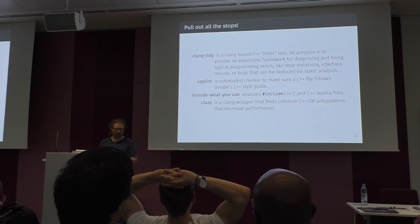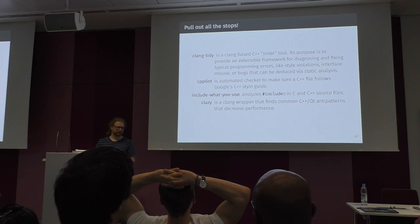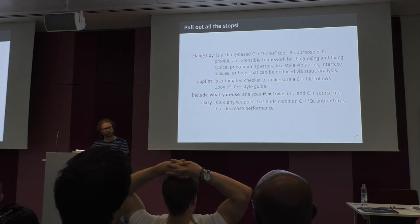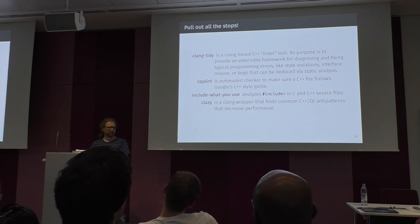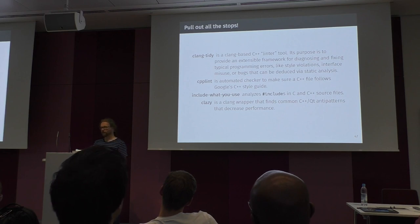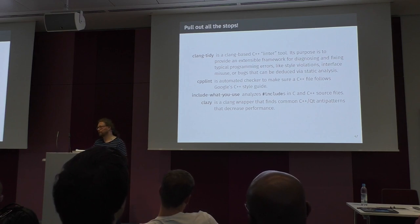Clazy has many Qt-specific warnings — for example, because Qt uses copy-on-write in many places, calling non-const functions on temporaries detaches objects and creates an unnecessary copy. A good example is range-based for-loops which implicitly call begin and end — if the object is not const, overload resolution picks the non-const overload, which detaches the Qt container.